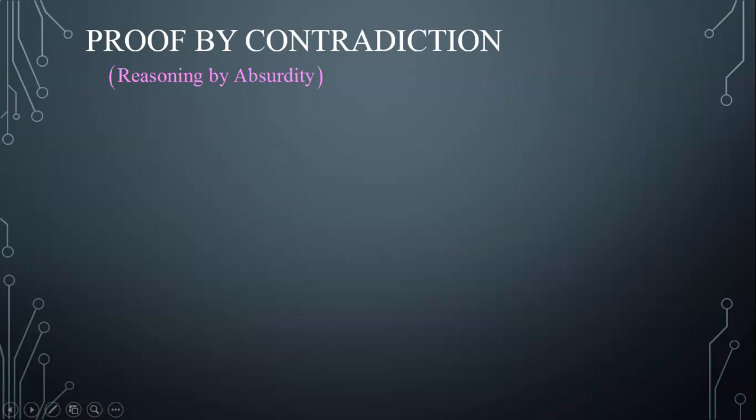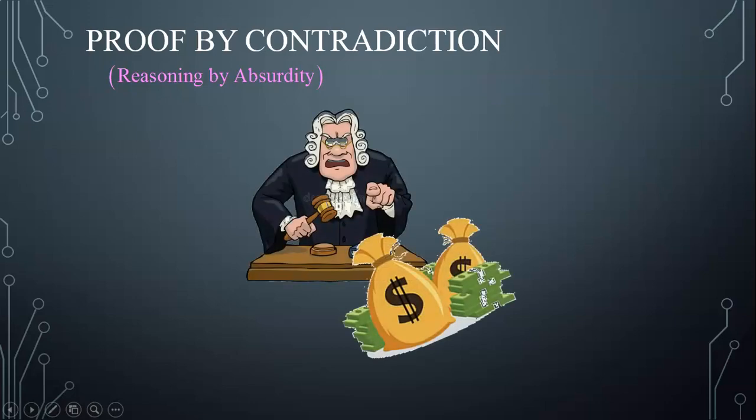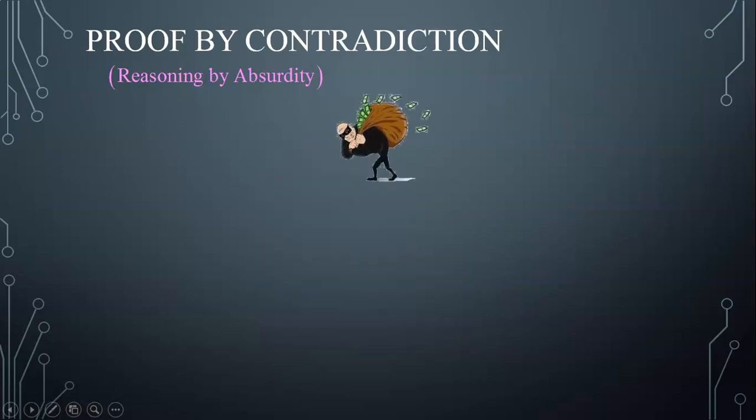To make sense of this type of proof, I'm going to start with an illustrative example. Suppose I'm accused of stealing one million dollars. To prove my innocence, I start by assuming I'm not innocent and that I stole the money.